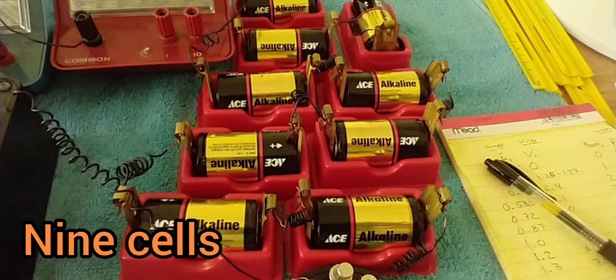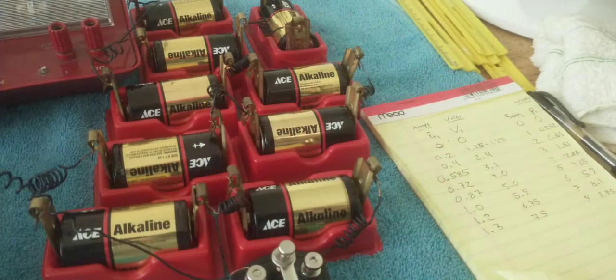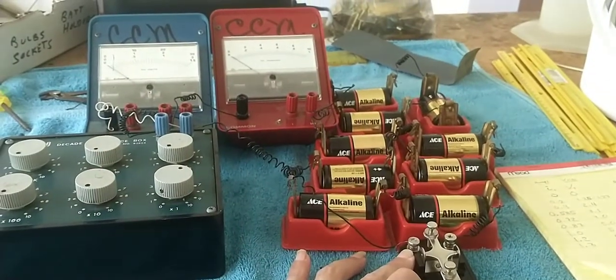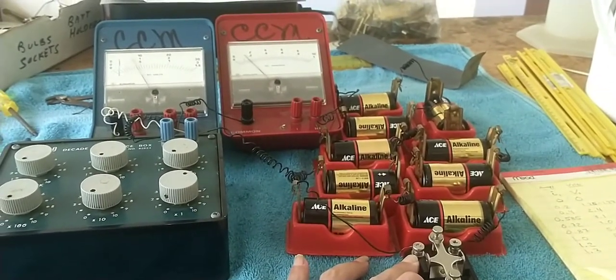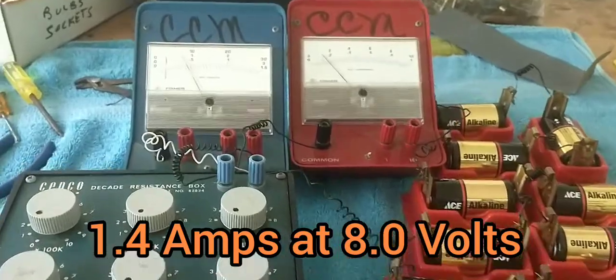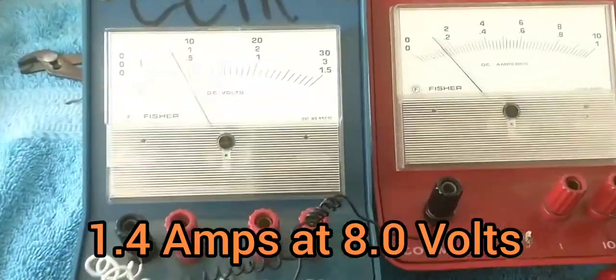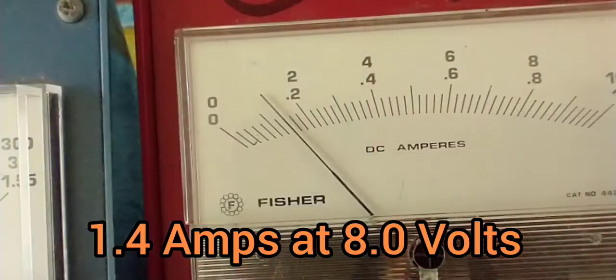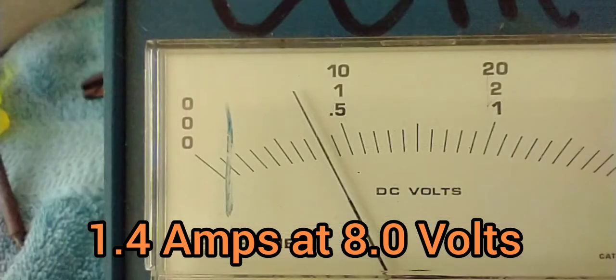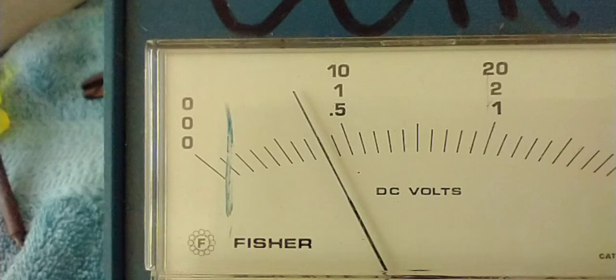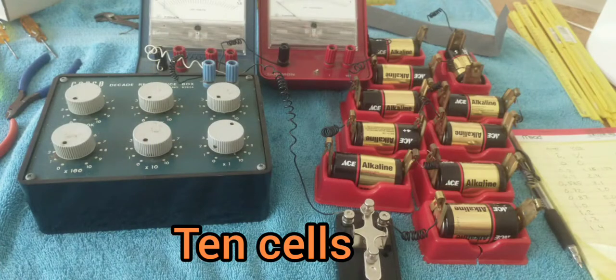You add another battery and you get nine batteries all wired in series. Nine of them. Close the switch. There you go. 1.4 amps on the left at just about 8 volts. That's about 1.4 amps. And the voltage sitting right about 8. That's 8 volts.